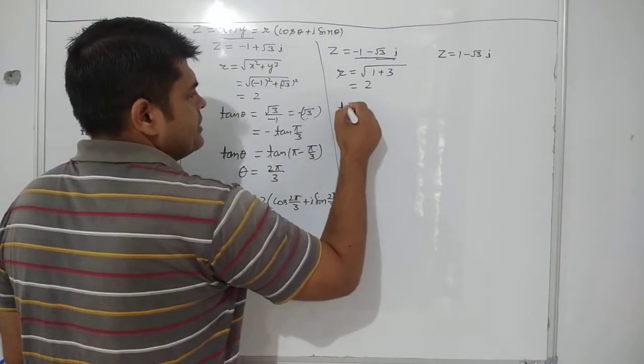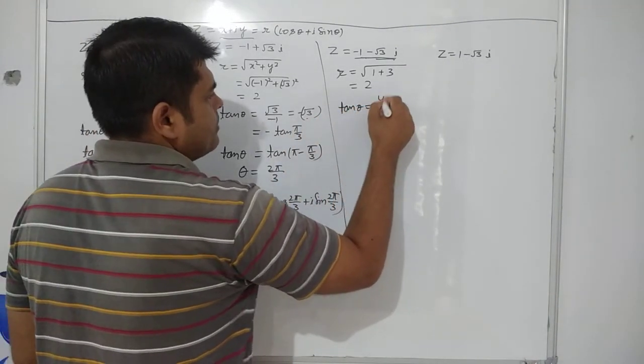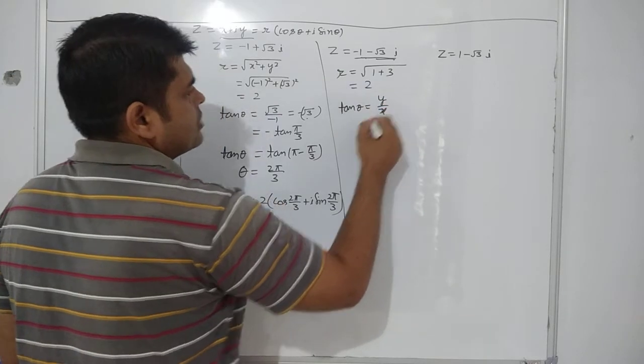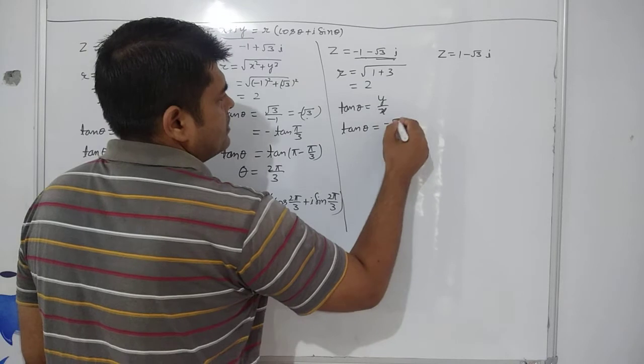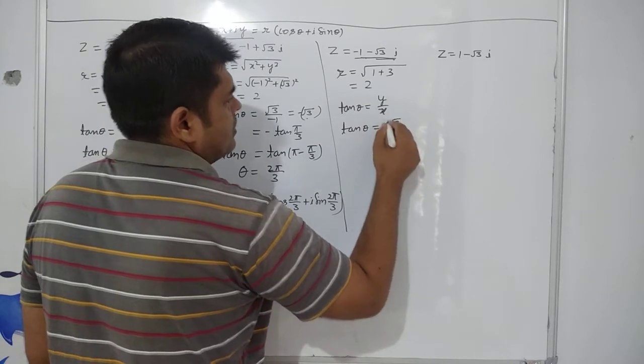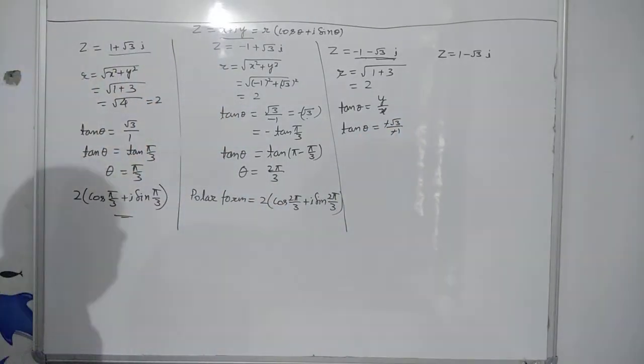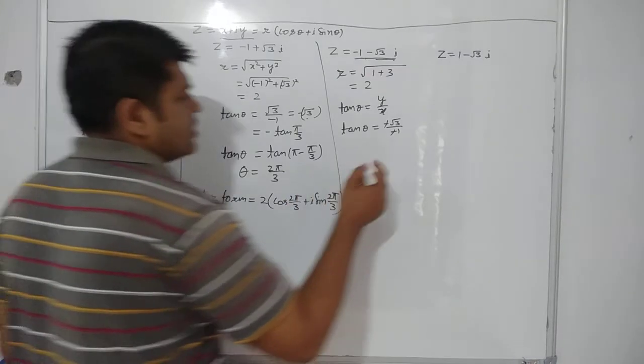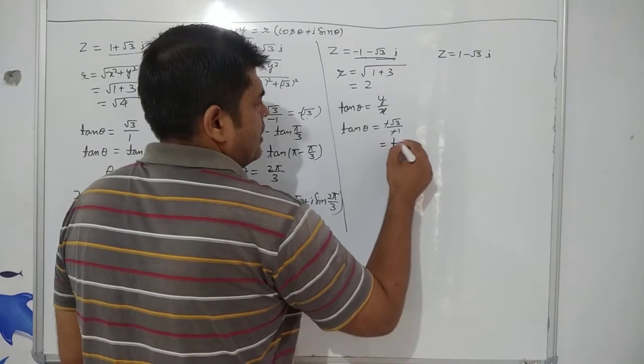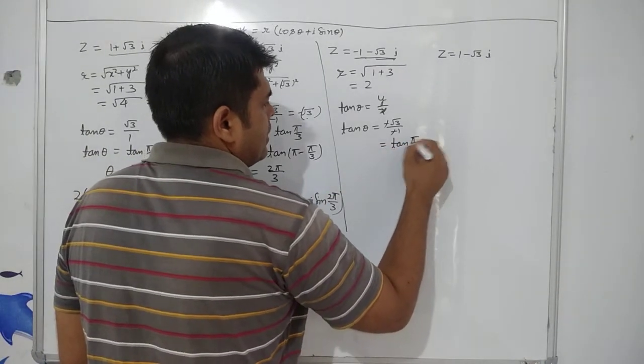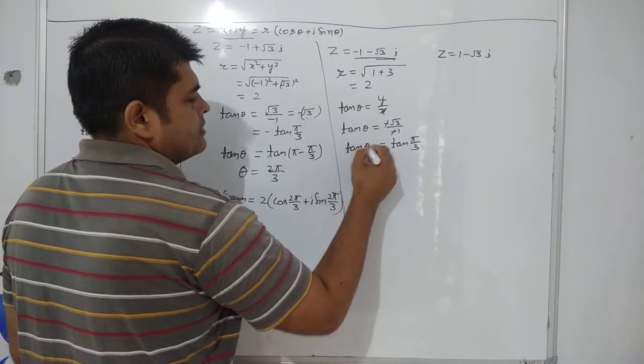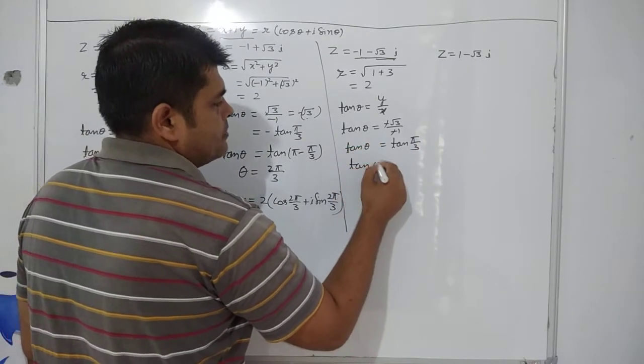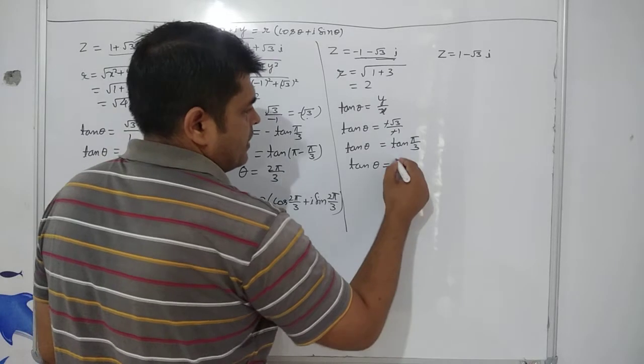Now, it is turn for theta, so tan theta equals to y by x and substituting the value, you are getting tan theta equals to minus root 3 by minus 1, so you are getting plus root 3. Tan theta is positive in the third quadrant, but remember, in third quadrant, you have to write down alpha as pi plus alpha.